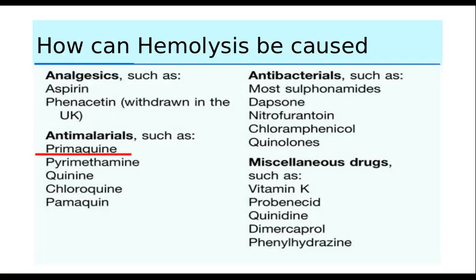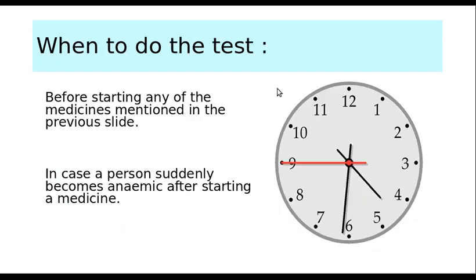When does hemolysis occur? Hemolysis usually occurs when there is oxidative stress — when certain medicines like aspirin, primaquine, and a whole lot of other medicines are prescribed to the patient. These drugs induce oxidative stress and can precipitate hemolysis. When do we do the test? Whenever there are plans to start any of these medicines known to cause such a condition, we need to do the test. Also, if a person suddenly becomes anemic after starting a medicine, the probability of G6PD deficiency becomes very high, and we need to test the patient.